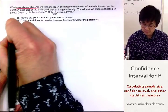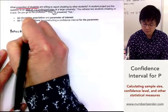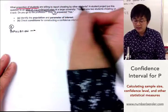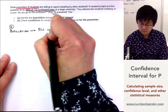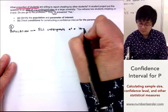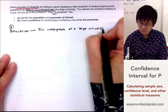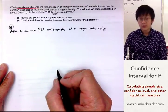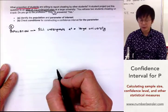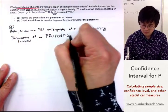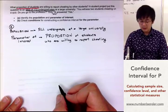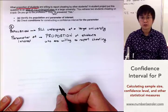For letter A, the population is simply all undergraduate students at a large university. The parameter of interest is the one that we're estimating — in this case, the proportion of students who are willing to report cheating by other students. This is how we identify the population and parameter of interest so that we can start constructing our confidence interval.